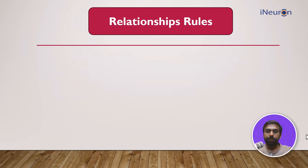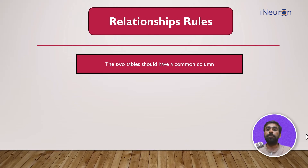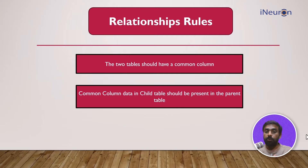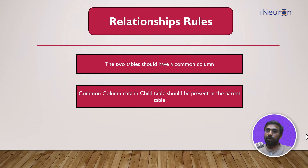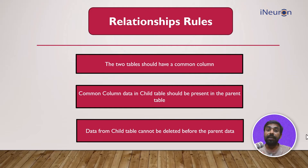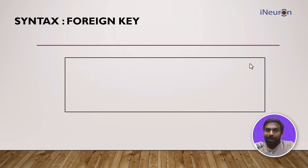There are certain relationship rules when connecting two tables. The two tables should have a common column. The column data in the child table should be present in the parent table — for example, if employee ID 204 is in the child table, the parent table must also have that data. The child table should be a subset of the parent table. Also, data from the child table cannot be deleted unless the same data is deleted from the parent table. There is a workaround for that as well, but these are the general rules.